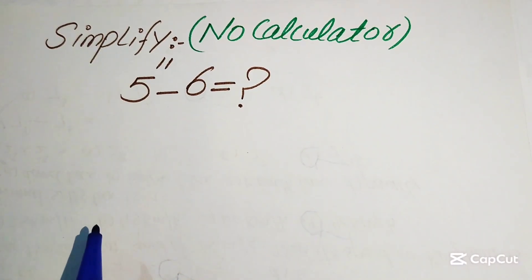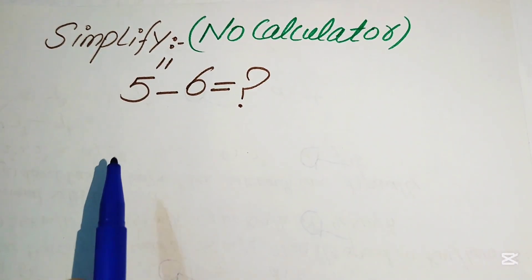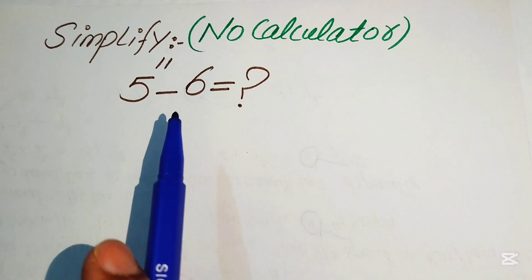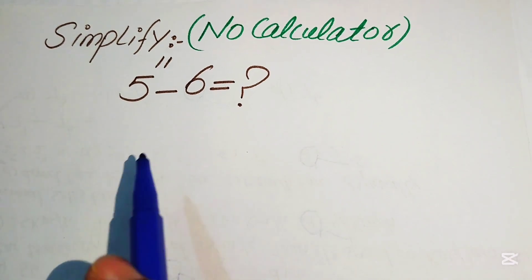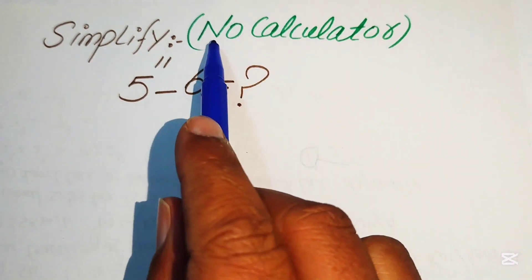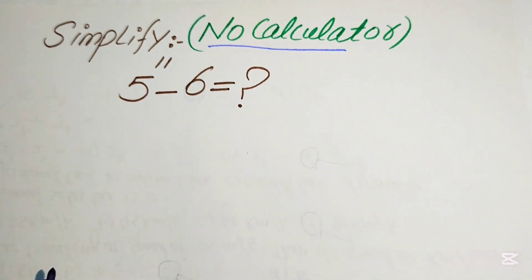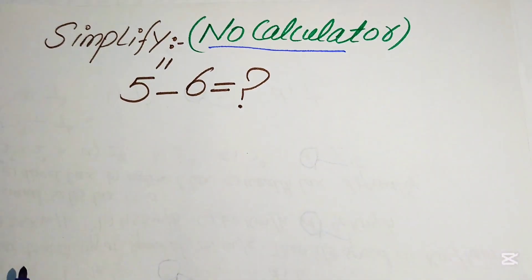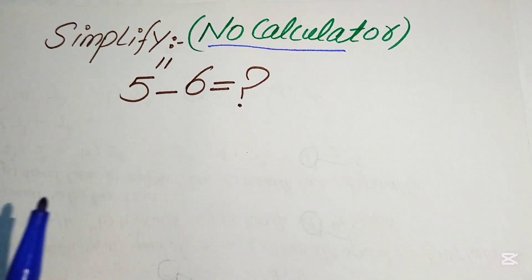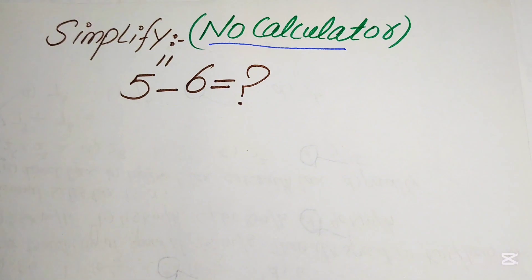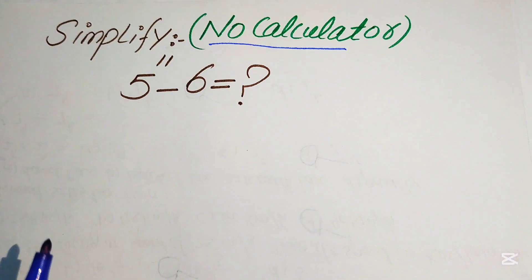Hello everyone. How to simplify this nice algebraic expression: 5 to the power of 11 minus 6. Remember, a calculator is not allowed in this problem, so we need to solve this without using a calculator. We use some simple tricks to get all of these things in your head. I hope you like this video.